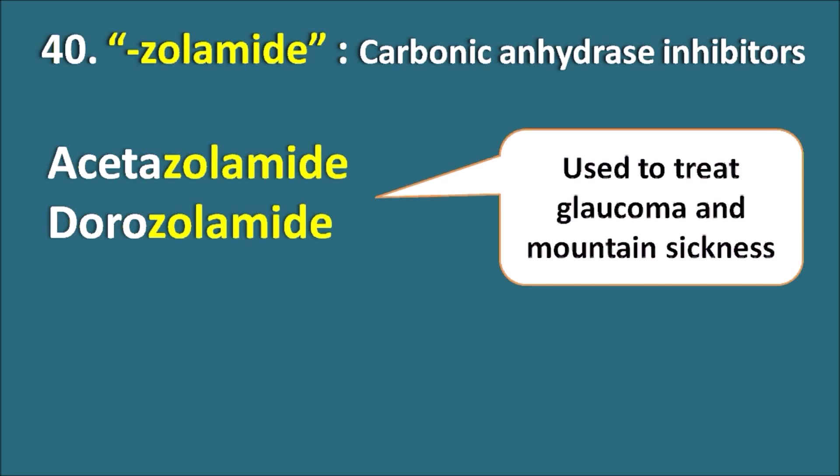In such a way we have 40 unique suffixes by which we can easily identify the drug category and the drugs within that category. If you practice these suffixes, whenever a drug name is asked, you can easily identify which drug it is and which category it belongs to. This is one of the easiest ways to remember drug names using their unique suffixes. Thank you for watching this video.